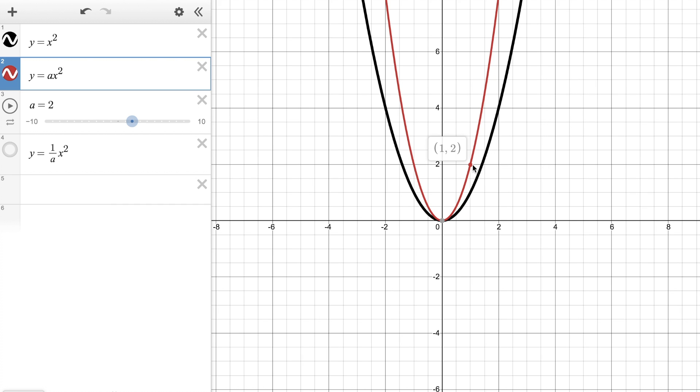So you can see that point has been stretched vertically by a factor of two and you can do that for any point on that base parabola. If I change the a value to three the y value of that point is now being multiplied by three which would place it up here at three. So when the a value is greater than one we say that there's a vertical stretch by a factor of that a value.